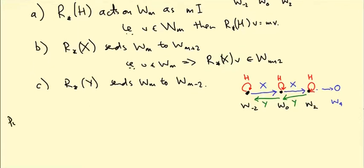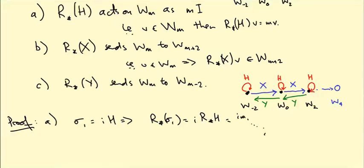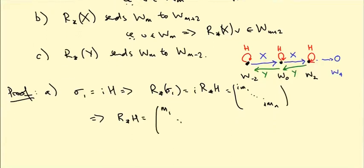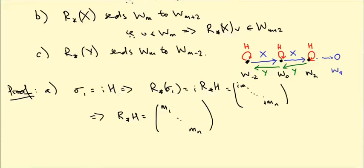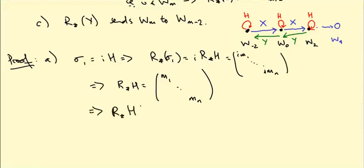Okay, let's prove the lemma. First of all, A, we've already proved it, because remember σ₁ is iH. So r_star σ₁ equals i times r_star H. But this was the diagonal matrix (im₁, ..., imₙ). So in other words, r_star H is just the diagonal matrix with M's on the diagonal, M₁ up to Mₙ. And then when we group all the weight spaces with the same weight together and just restrict to those, we only pick up the diagonal entries with an M. So r_star H restricted to W_M is then just the diagonal matrix with M's on the diagonal.